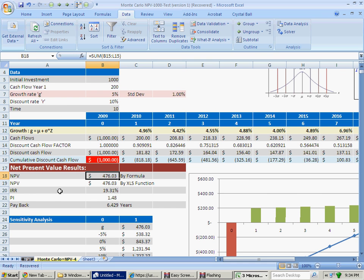Here we have the results for the net present value. I have $476. This is calculated by algebra, and the second one is calculated by Excel function. It's a direct calculation. The internal rate of return is 19.31%, which is bigger than 10%, so that means we can accept the project.